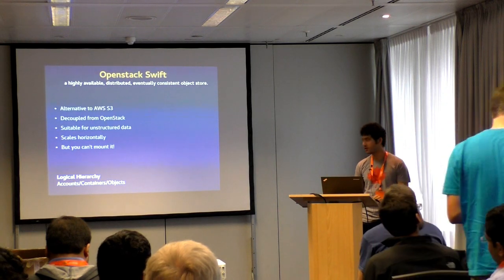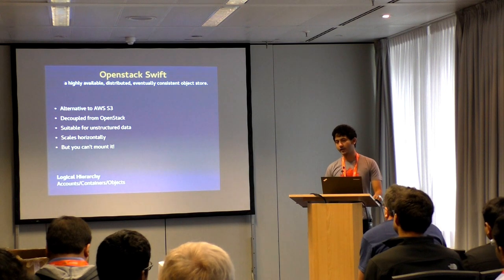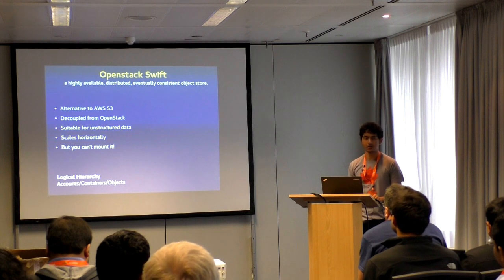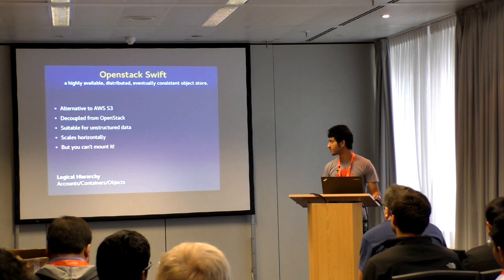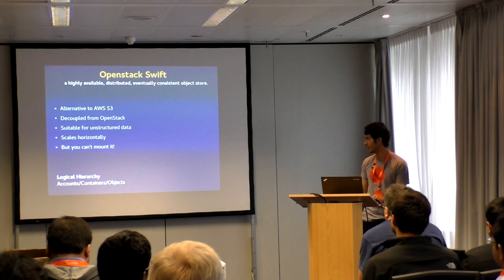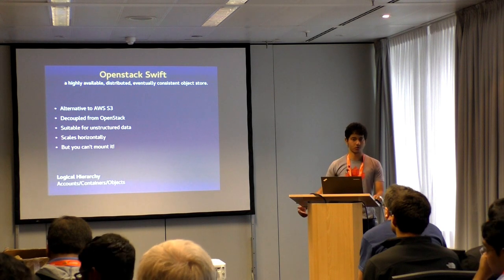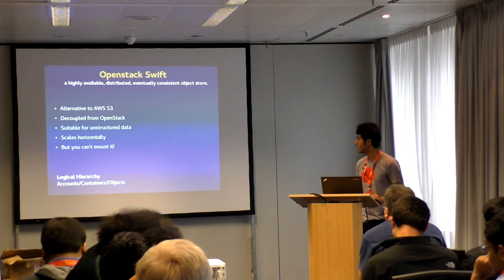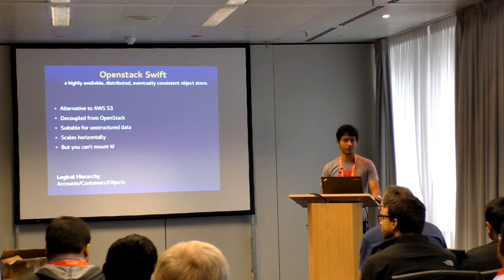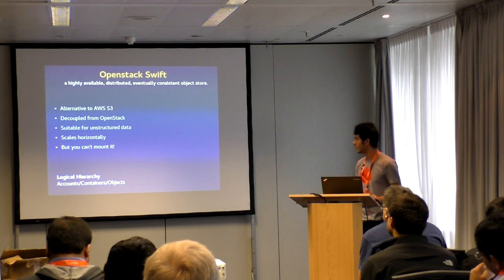The good thing about Swift is it's very separate from the rest of the OpenStack components, so you don't need the entire OpenStack stack to use Swift. You can just deploy a Swift-only cluster on your nodes. It's primarily used for images, media, and any kind of unstructured data. If you need more storage, you add more nodes, you add more devices, and it can scale horizontally. But it's object storage, so you can't really mount it — you have to follow object semantics to put data in and get data back.